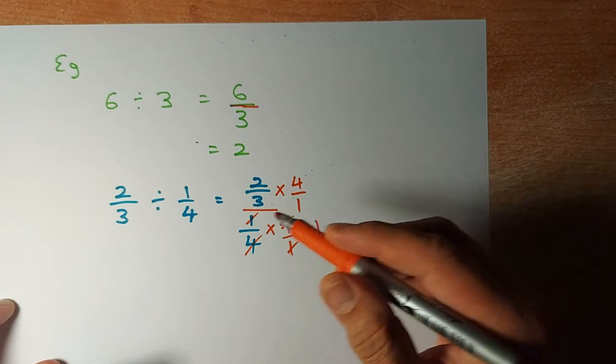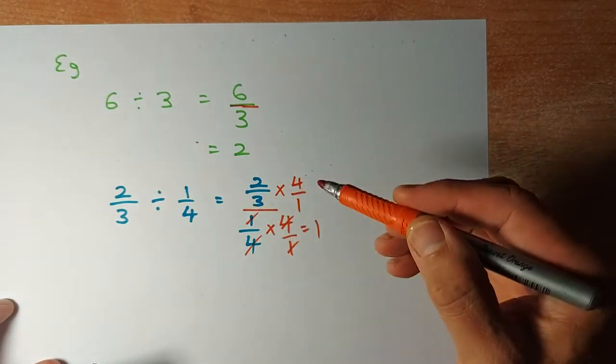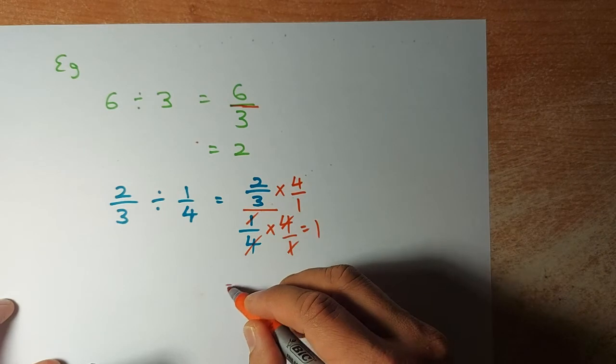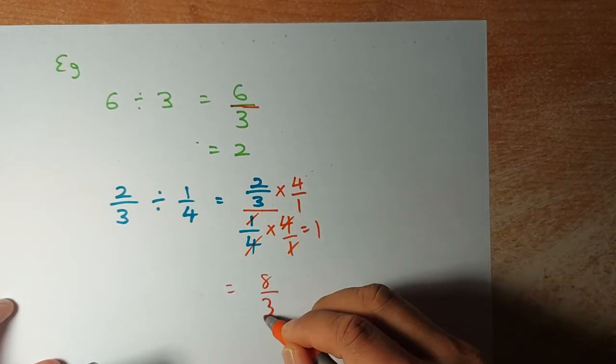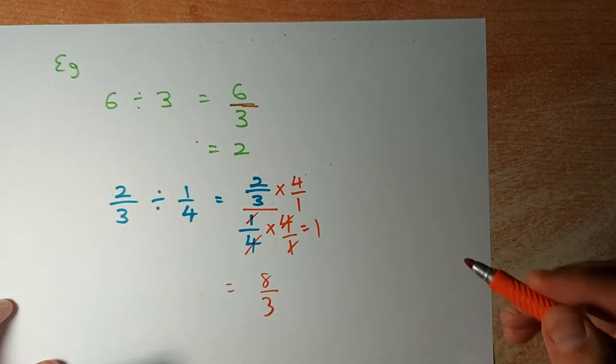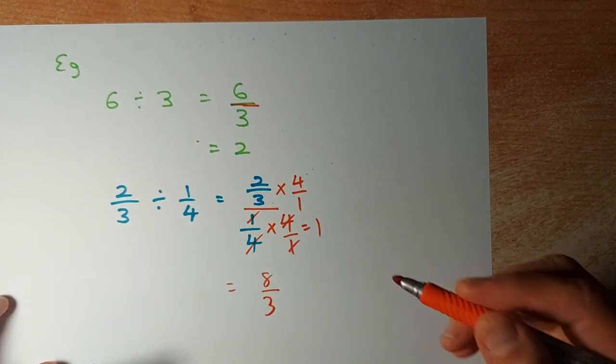So that's why when you divide, you swap the numerator and denominator around. This answer is going to be the same. 2 times 4 is 8, 3 times 1 is 3. This is exactly what we get in the first example.